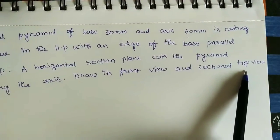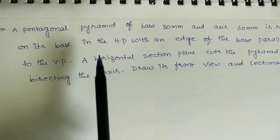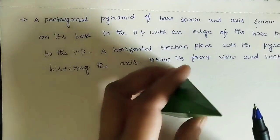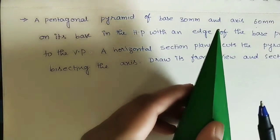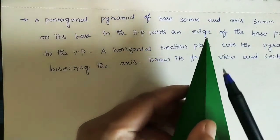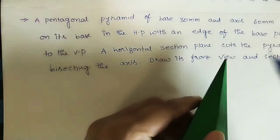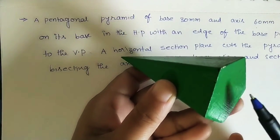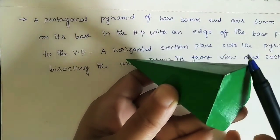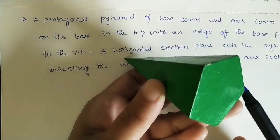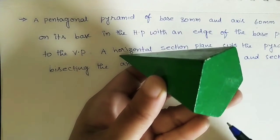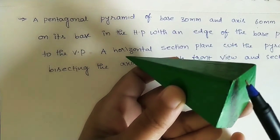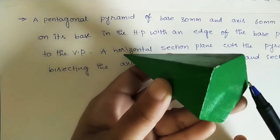This is the given question. A pentagonal pyramid is given — this is the pentagonal pyramid. It has a pentagon as its base. These are called edges or sides of the pentagon. As we know, it has five sides or five edges.